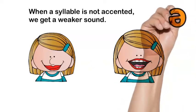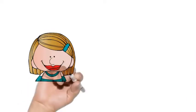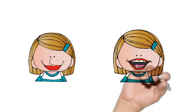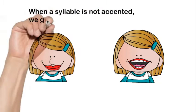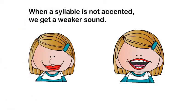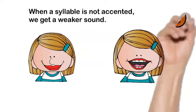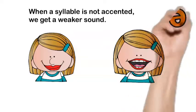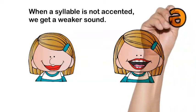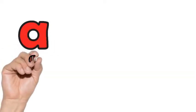But when an 'a' is in an unaccented syllable, it says the schwa sound — 'uh.' Like in the word 'alive': 'uh-live.' The 'uh' is unaccented and that is why it's saying that schwa sound. The schwa 'a' sound can also be found at the end of a word, like in the word 'Africa.' The first syllable is accented, so the last syllable is schwa: 'Africa.'